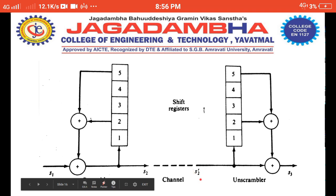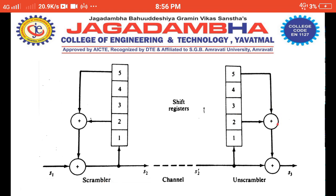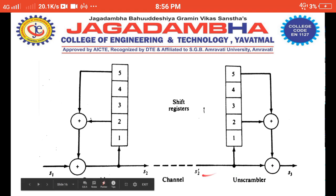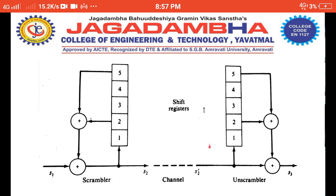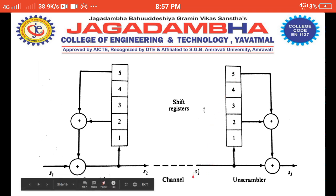The output S2 is then shifted into shift register position 1, and the same process is repeated for all incoming input bits. Likewise for unscrambling, we receive the bit sequence S2'. The unscrambling process is the reverse of scrambling — we perform modulo-2 addition of shift register 2 and shift register 5, and this output is modulo-2 added with the received input bit sequence to give the unscrambled bit sequence.